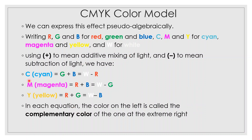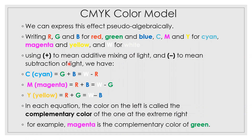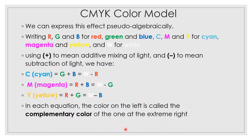In each equation, the color on the left is the complementary color of the one on the right. Red's complementary color is cyan; green's complementary color is magenta; blue's complementary color is yellow. Two complementary colors added together produce white — for example, cyan plus red equals white. RGB is used in computer displays; CMYK is used for printing purposes.